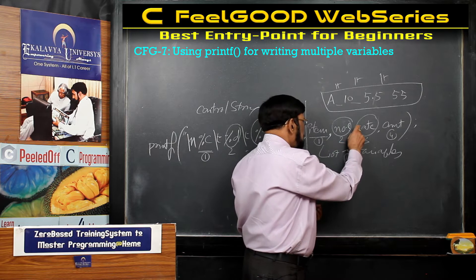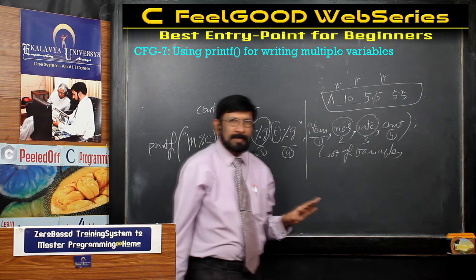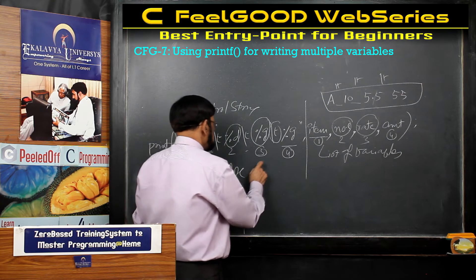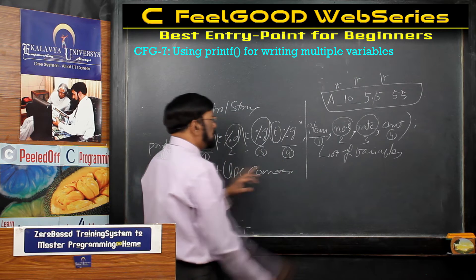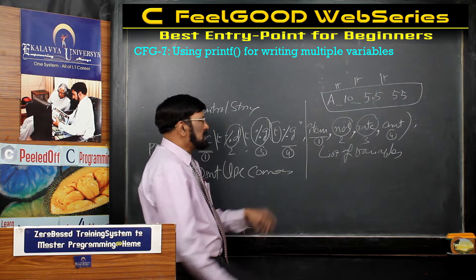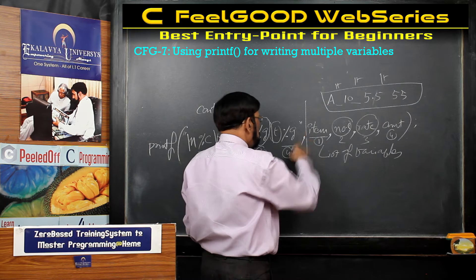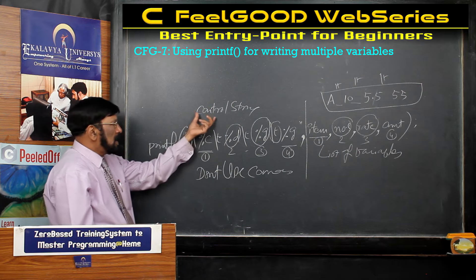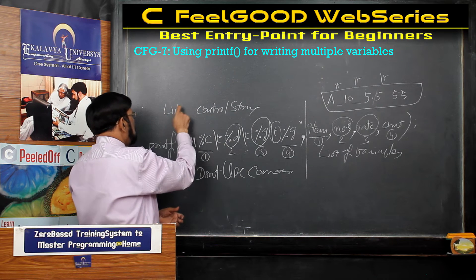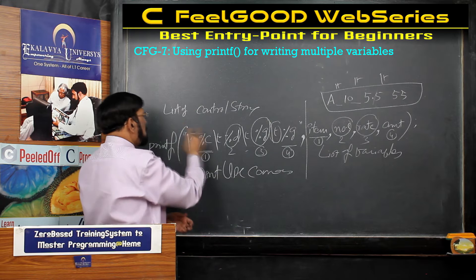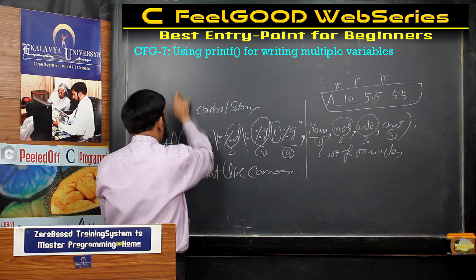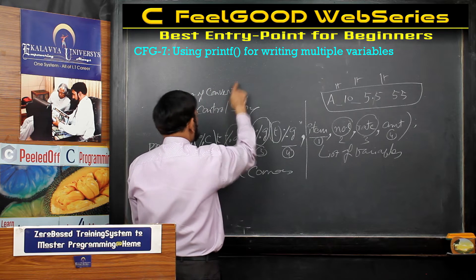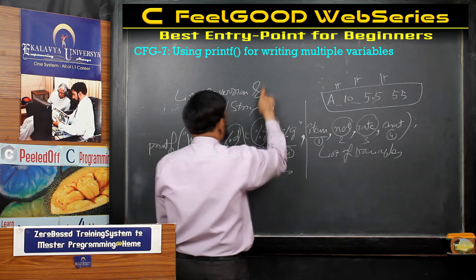Every item should be separated by comma, otherwise it will give an error. Don't use commas in the control string side. You must use comma as separator in the list of variables, and the two parts should be separated by a comma. This is called the list of conversion specifiers. Whole thing is the control string. List of conversion specifiers — these are the terms perfectly used.